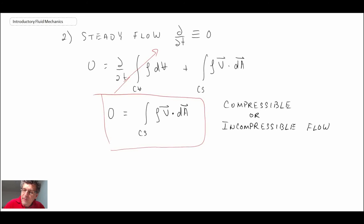The last special case that we'll look at is one where we have uniform flow over an area. So that would be where the velocity vector does not change, so it's a fixed amount over an area.